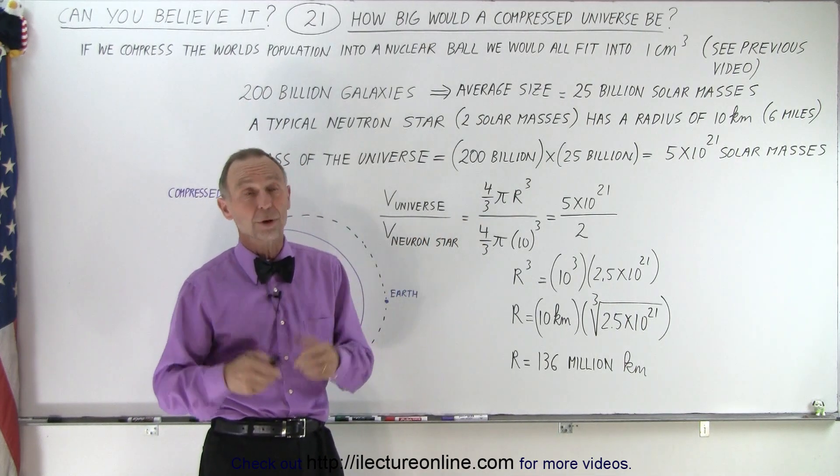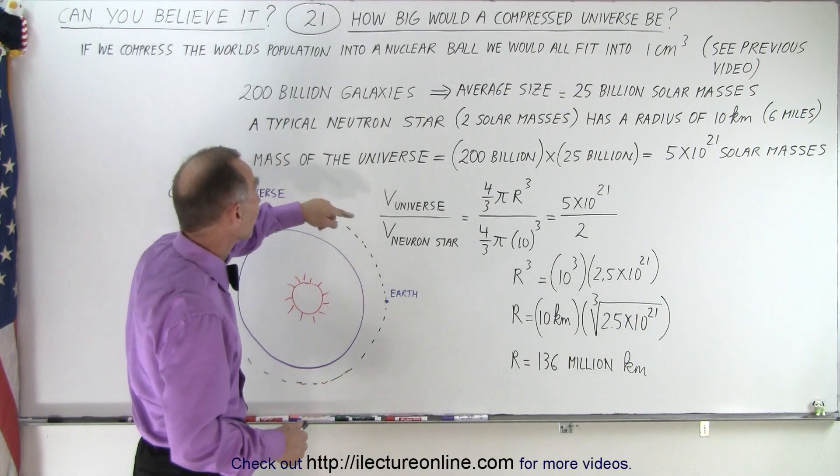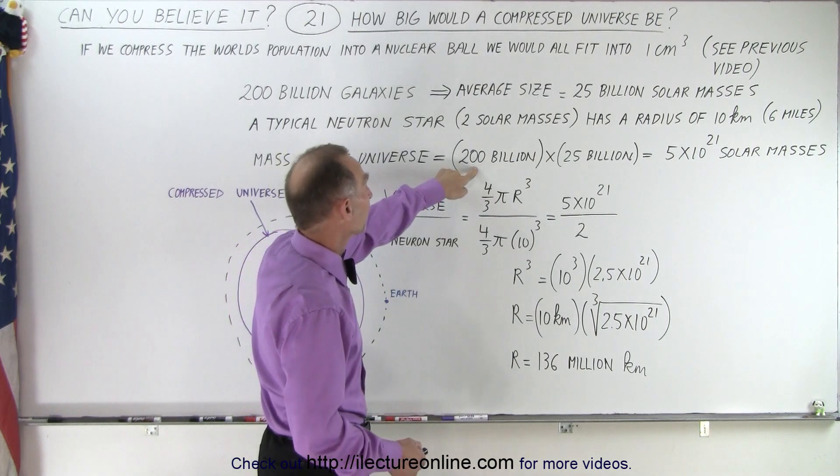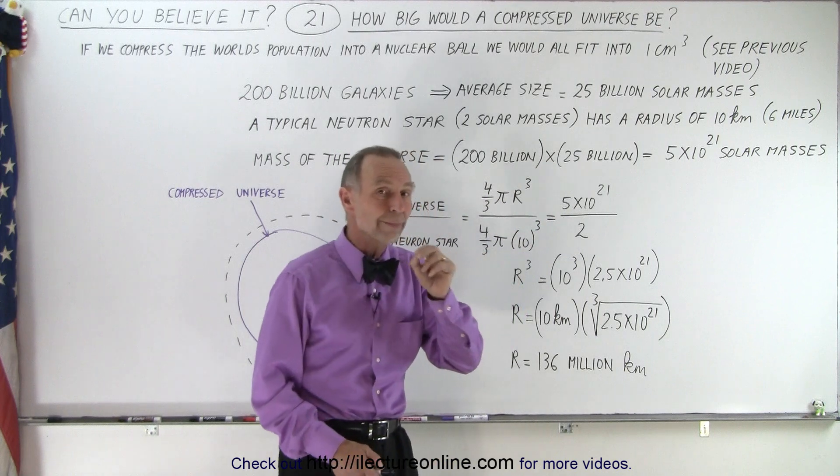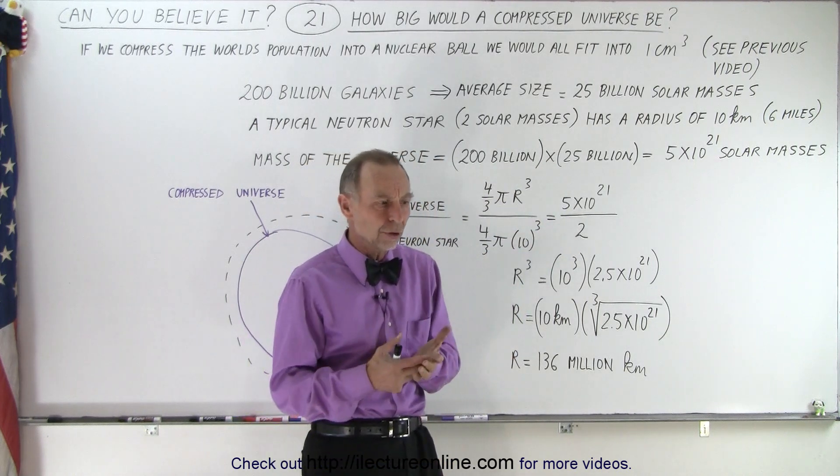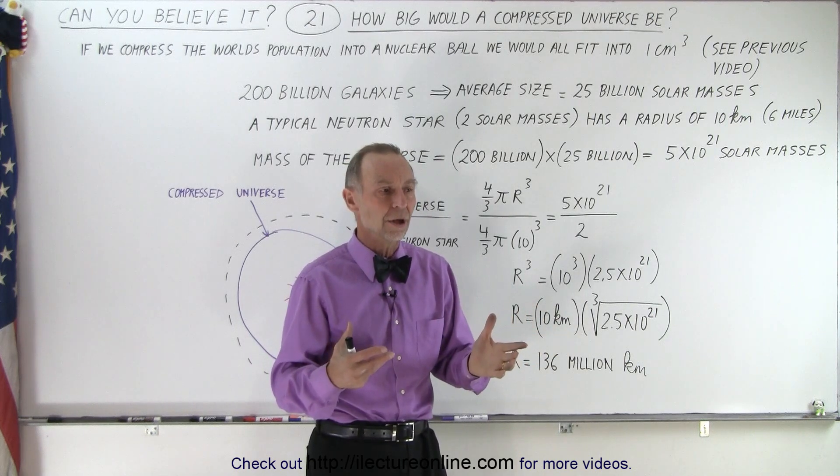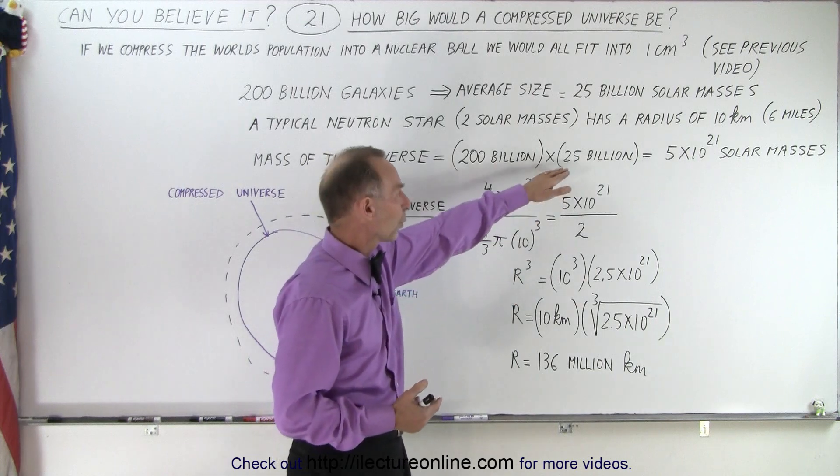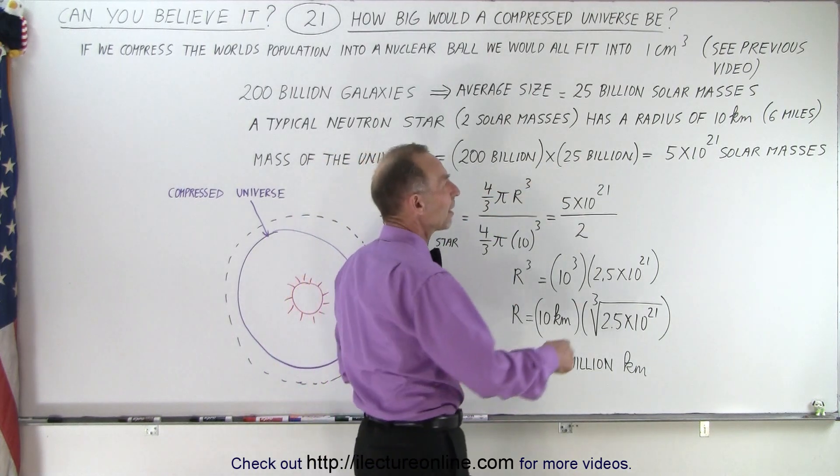I did a quick calculation. The mass of the universe is 200 billion galaxies with 25 billion solar masses in each galaxy on average. I know our Milky Way galaxy has a hundred billion solar masses, but it's bigger than average, so on average perhaps 25 billion solar masses times 200 billion galaxies.